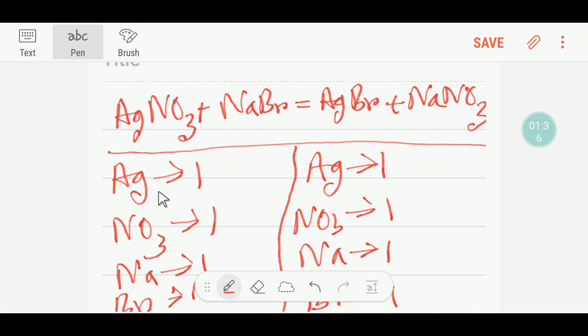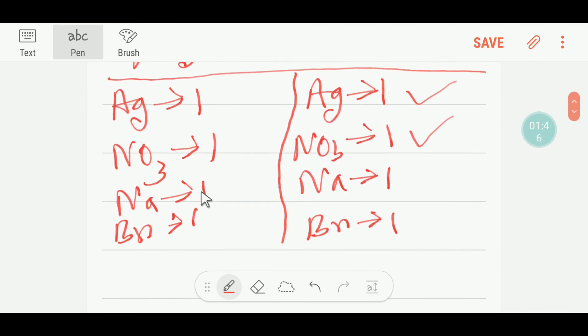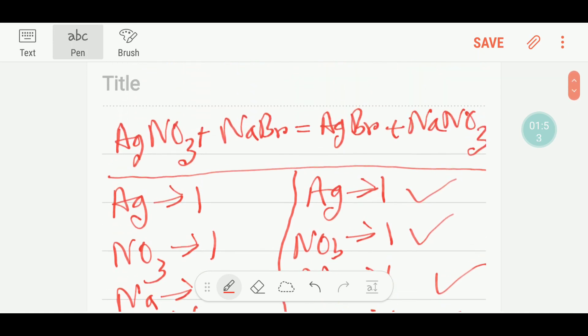Let's compare the number of atoms and polyatomic ions. Silver: one, one - so silver is balanced. Nitrate: one, one - so nitrate is balanced. Sodium: one, one - so sodium is balanced. Bromine: one, one - so bromine is balanced. So everything is balanced.